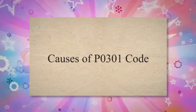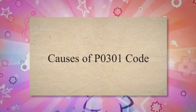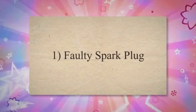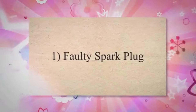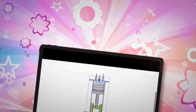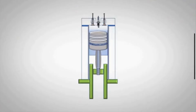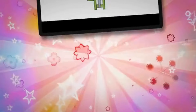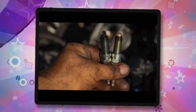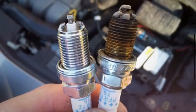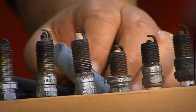Causes of PO301 code. 1. Faulty spark plug. Spark plugs play a crucial role in igniting the air-fuel mixture in the combustion chamber. Over time, spark plugs can wear out or become fouled with deposits. A worn-out spark plug in cylinder 1 may not ignite the fuel-air mixture properly.